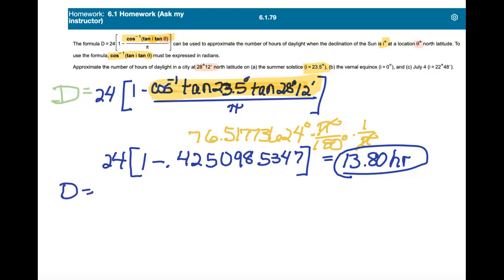That's equal to, and that's going to be 24 times 1 minus the inverse cosine, and put all this stuff in parentheses,